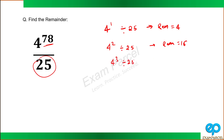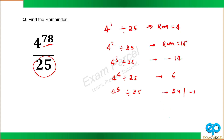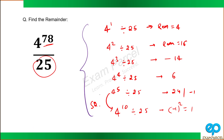4 raised power 3 divided by 25 gives a remainder of 40. 4 raised power 4 divided by 25 gives a remainder of 6. 4 raised power 5 divided by 25 gives 24, which we can rewrite as minus 1 as a negative remainder. So if I square this, I get 4 raised power 10 divided by 25, which is minus 1 squared, giving remainder 1. So after a cycle of 10, my remainders will start repeating.